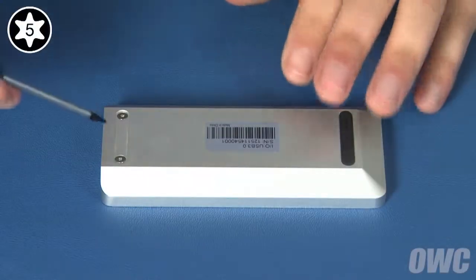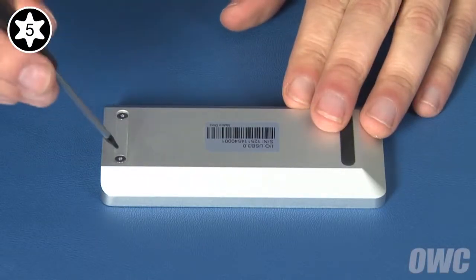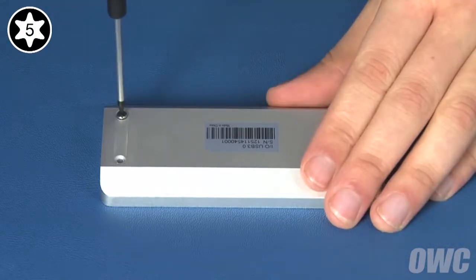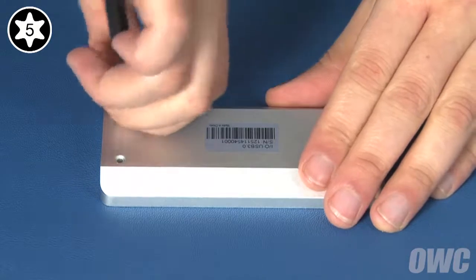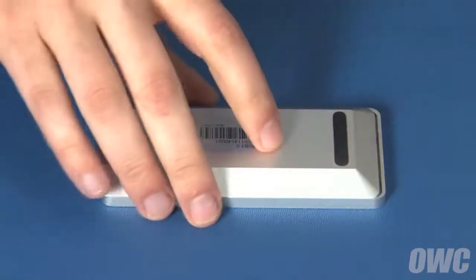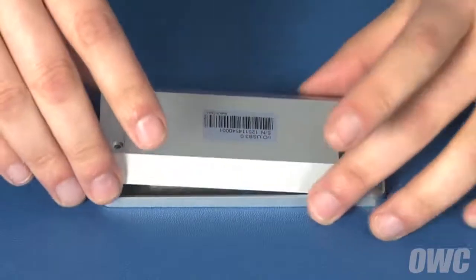The first thing to do is to remove these two Torx T5 screws from the bottom of the enclosure. You should then be able to slide the bottom half over, separating it from the top half, which you can set aside.